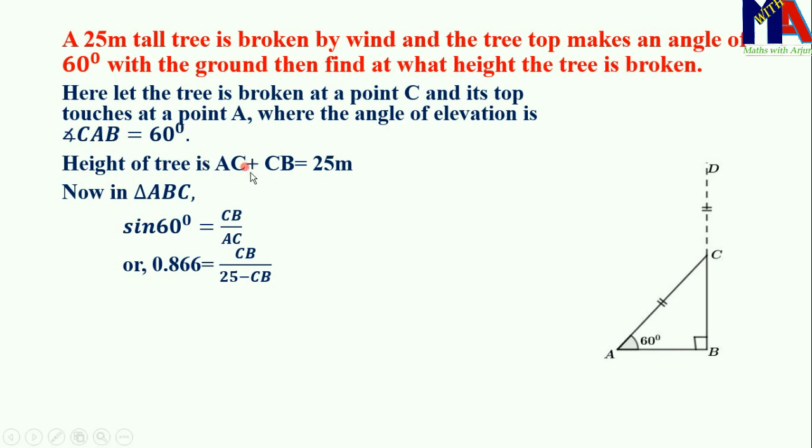You can write this equation: AC plus CB equals 25. So AC is equal to 25 minus CB.